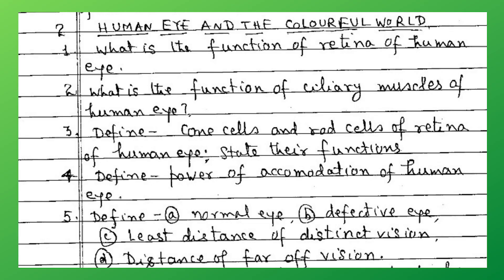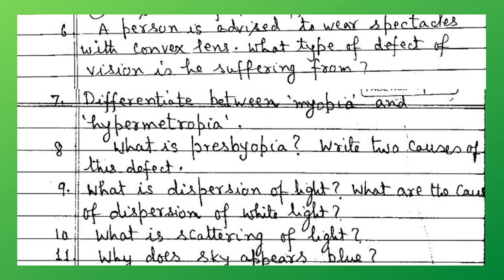Now we go to the human eye and the colorful world. What is the function of the retina of the human eye? What is the function of the ciliary muscles of the human eye? Define cone cell and rod cell of the retina of the human eye and state their functions. Define the power of accommodation of the human eye. Define normal eye, defective eye, the least distance of distinct vision, and the distance of far-off vision. A person is advised to wear spectacles with a convex lens — what type of defect of vision is he suffering from? State the two causes of this defect.